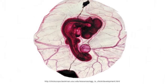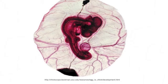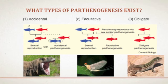As for the sex of the offspring, they are most likely to be female in species that have an XY-based sex determination system. Without the addition of the Y chromosome from a male, offspring produced from parthenogenesis will possess two X chromosomes and therefore be female.